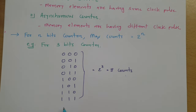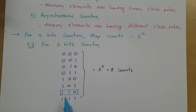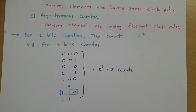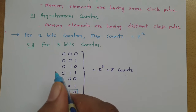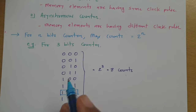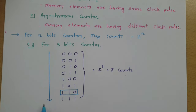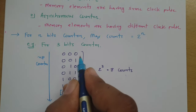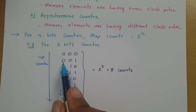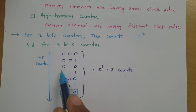Each output represents a state. States will change with respect to the clock frequency and will change in sequence. For example, in an up counter, the count increases with each clock pulse: the first count is 0 0 0, the second clock gives 0 0 1, the third clock gives 0 1 0, and so on — that is how the count increases.